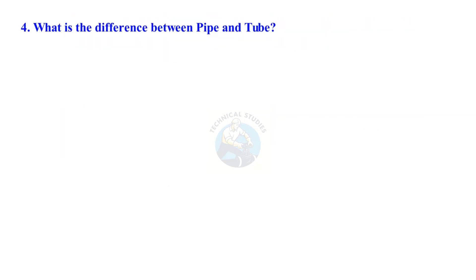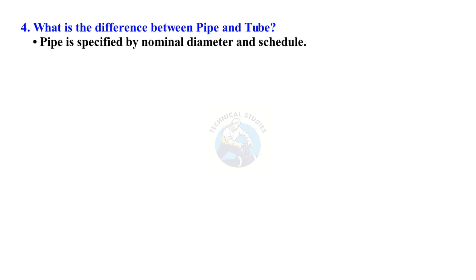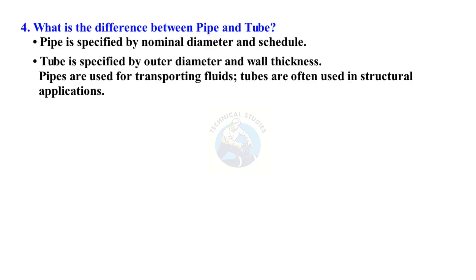What is the difference between pipe and tube? Pipe is specified by nominal diameter and schedule, while tube is specified by outer diameter and wall thickness. Pipes are used for transporting fluids, whereas tubes are often used in structural applications.